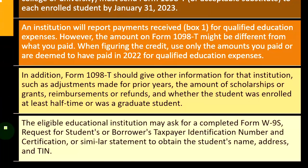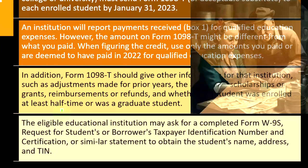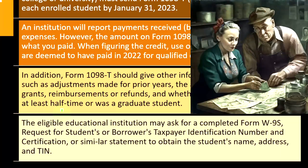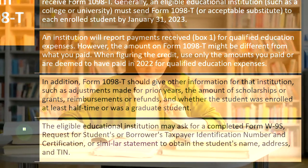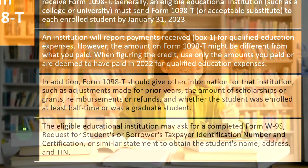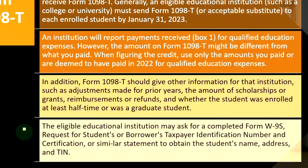The eligible educational institution may ask for a completed Form W-9-S — Request for Student's or Borrower's Taxpayer Identification Number and Certification — or a similar statement to obtain the student's name, address, and TIN. You have to give them that information so they can populate it on the Form 1098-T.